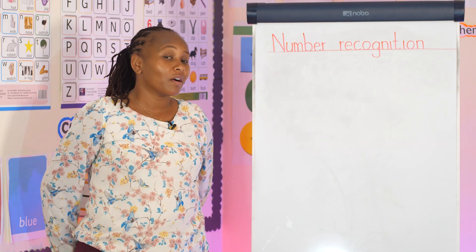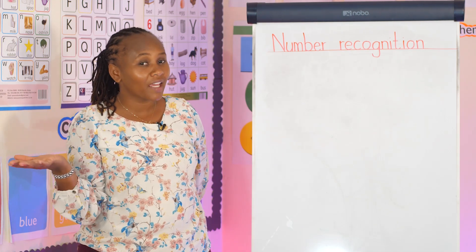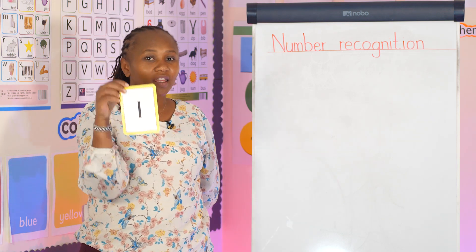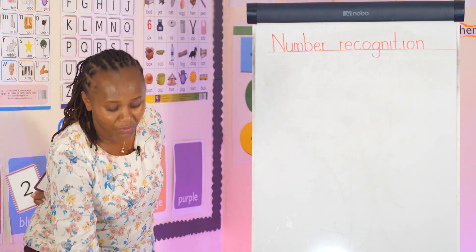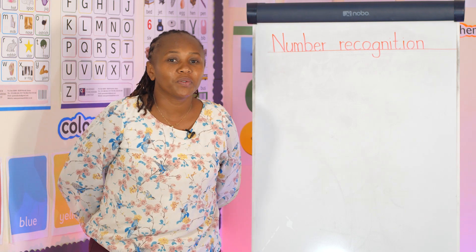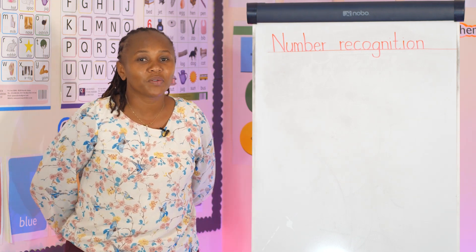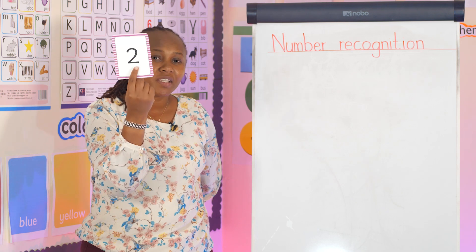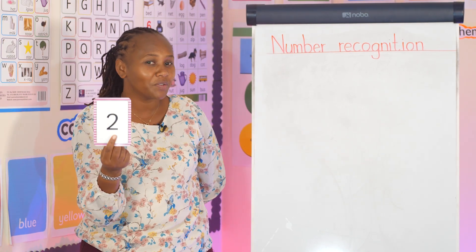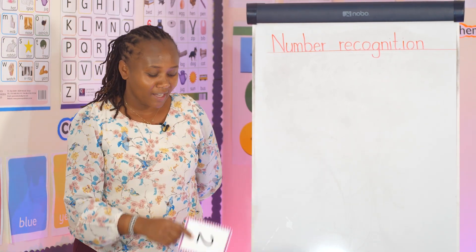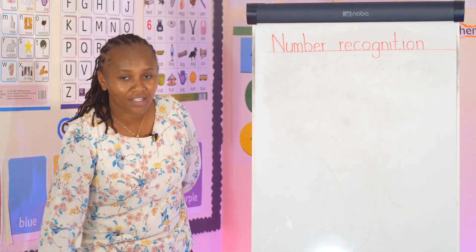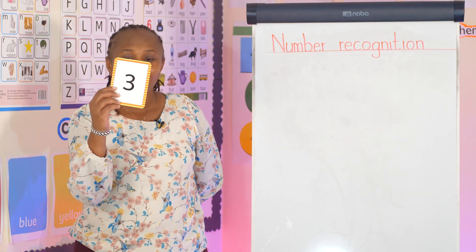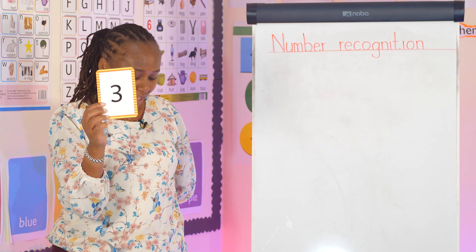Number one, number one, where are you? Here I am, here I am, and how do you do? Number two, number two, where are you? Here I am, here I am, and how do you do? Number three, number three, where are you? Here I am, here I am.